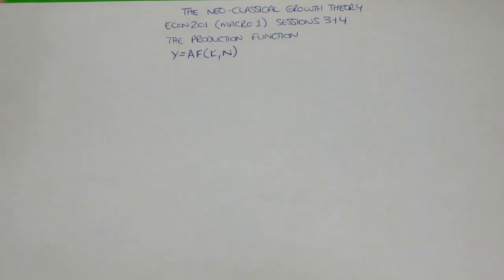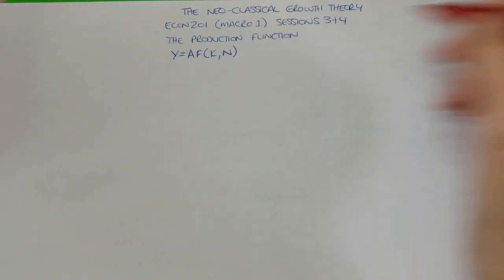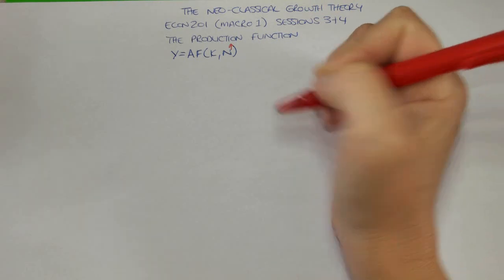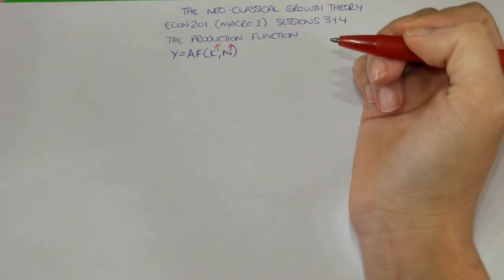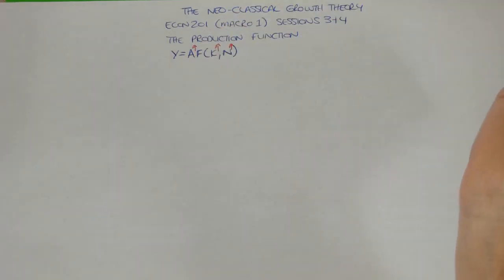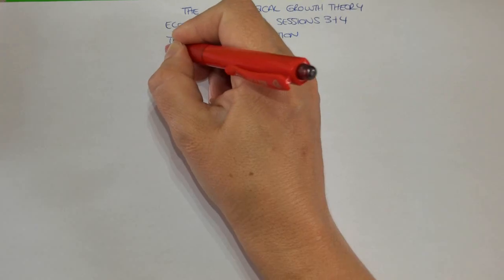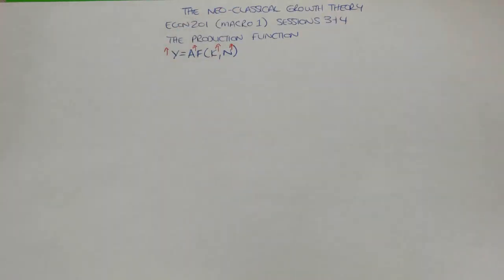Notice that it's all in uppercase or capital letters. Capital Y stands for total output. Capital A stands for technology. F is the mathematical operator — it demonstrates that this is a function of. Capital K stands for total capital stock, and capital N stands for labor or the population size. This production function demonstrates the link between what you put in and what you get out. If we were to increase the population size, increase total capital stock, or improve technology, that would increase the amount of output produced.